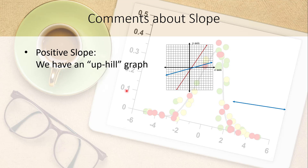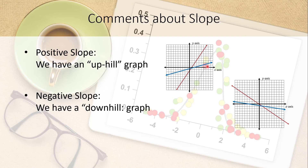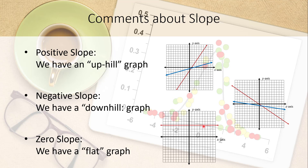If the slope is positive, the graph looks like an uphill line going left to right. A larger positive slope is steeper; a smaller one is flatter. A negative slope looks like going downhill from left to right, and absolute value again determines steepness. If the slope is zero, the graph is flat. If the slope is undefined, the line is vertical.